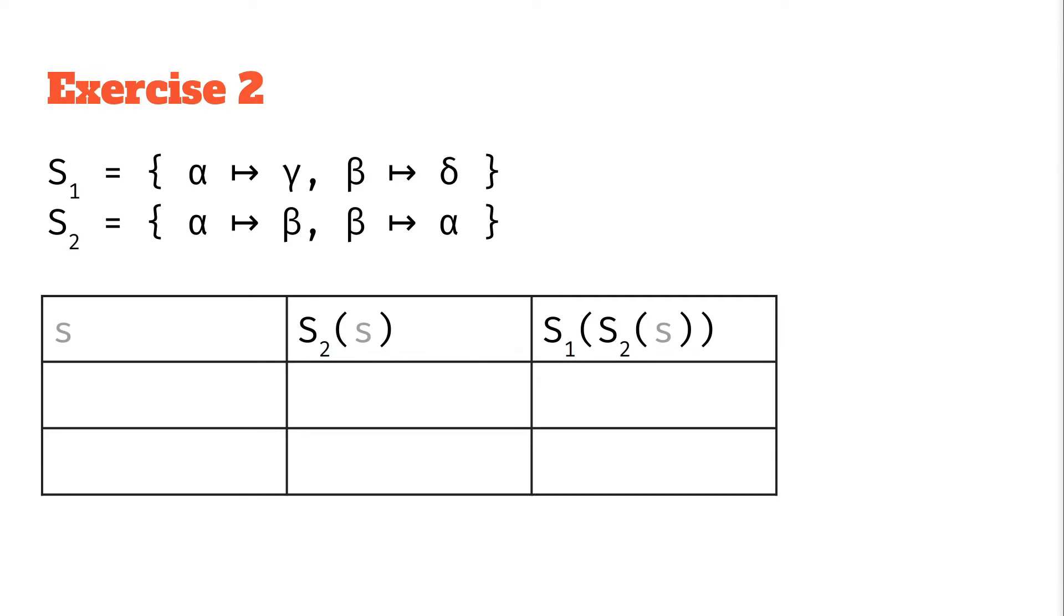Let's bring up our table. Again we can find where do we map from. Well that's our alphas and betas here. We'll put those in our table. Let's look at the first row, the alpha. If we apply the s2 on alpha, we're using this mapping to get beta. And then we apply s1 on that. Where does the beta get mapped to? It gets mapped to a delta.